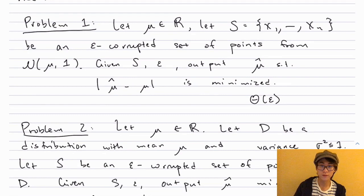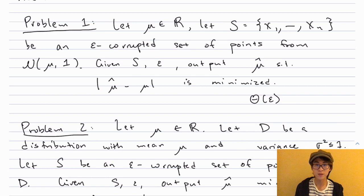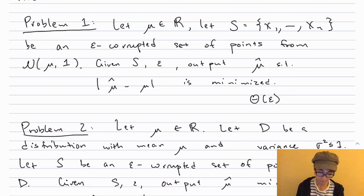The first problem we considered was as follows. There was some unknown mean which is a real number, and we were given an epsilon-corrupted set of samples from a Gaussian with that mean and variance one. Given the set of samples, the goal was to output some μ̂ which is close to μ. For this problem we showed that the right answer is θ(ε), at least if n is sufficiently large.